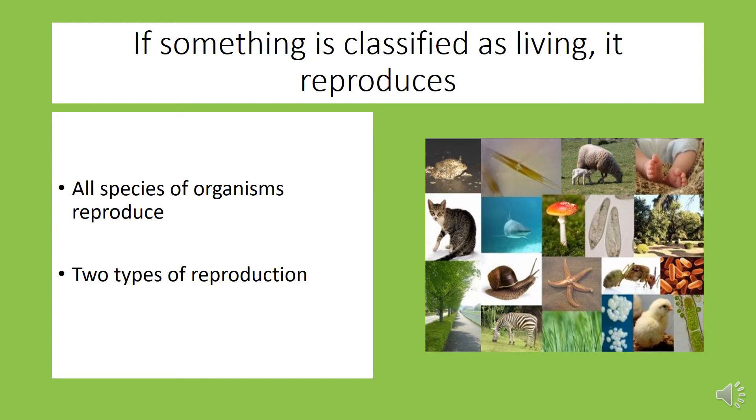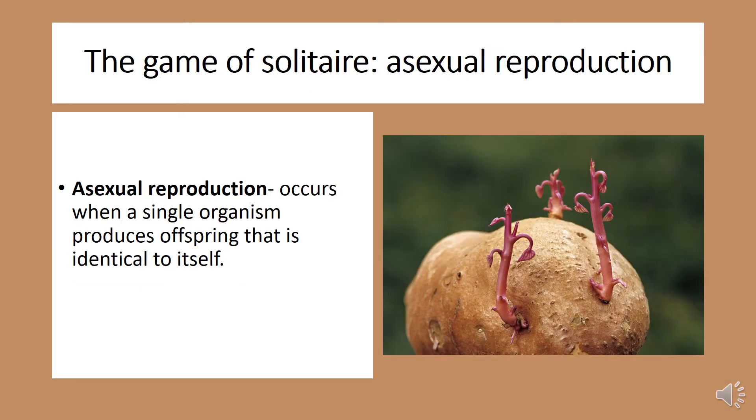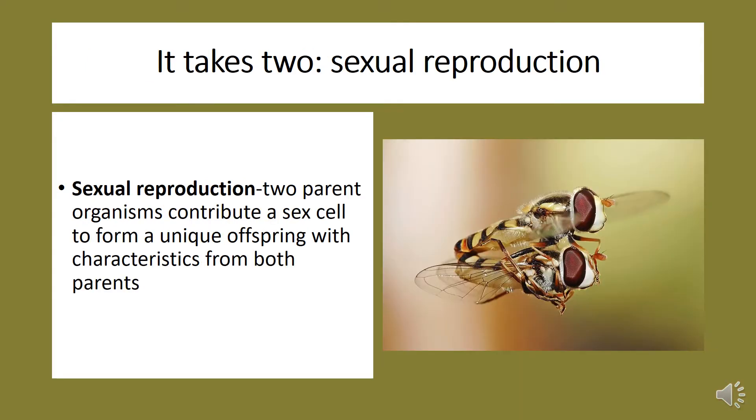Now there's two types of reproduction. The first type of reproduction is asexual reproduction. You can think of it like a game of solitaire. Asexual reproduction occurs when a single organism produces offspring that's identical to itself. It takes two for the second type of reproduction, which is sexual reproduction. This occurs when two parent organisms contribute a sex cell to form a unique offspring with characteristics from both parents.